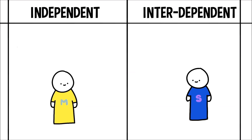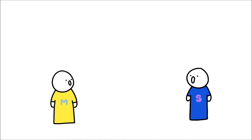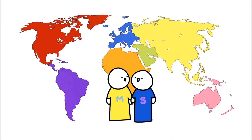But remember, nobody has 100% independent or interdependent self-construal. After all, this isn't a definite divide and the real world is much more complex. By understanding the manifestation of these dominant self-construals that make individualistic and collectivistic cultures so different, we get to understand each other better. Despite the differences, we can still get along!